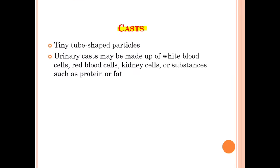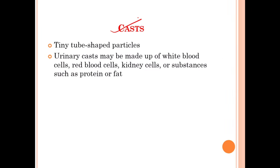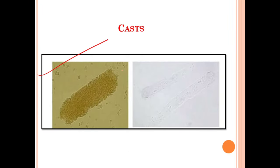The next element of the urinary sediment is casts. Casts are tiny tube-shaped particles. The urinary cast may be made up of white blood cells, red blood cells, kidney cells, or substances such as protein or fat. जब आप urine sediment पे microscopic examination perform करोगे तो tiny tube-shaped particles देखने को मिल सकते हैं — उनको urinary casts कहते हैं। Casts WBC, RBC, kidney cells, protein, या fat के बने हो सकते हैं। These are the microscopic pictures of the casts that you may observe in the urinary sediment of a suspected animal.